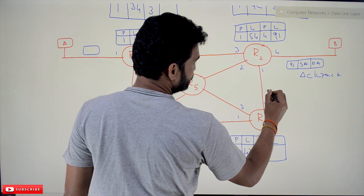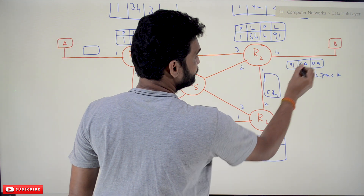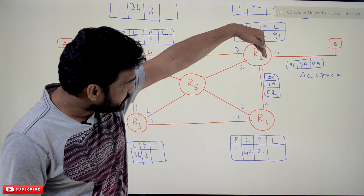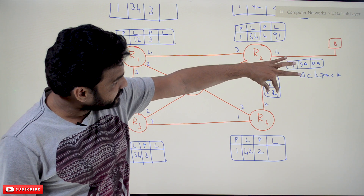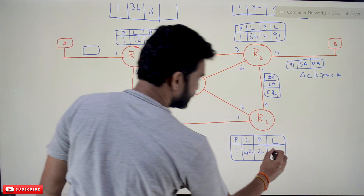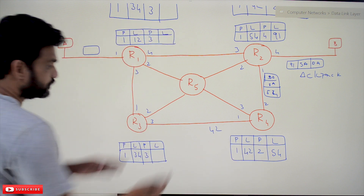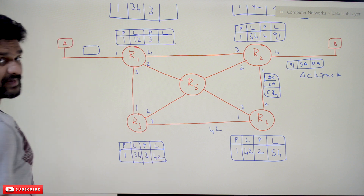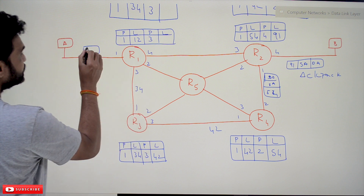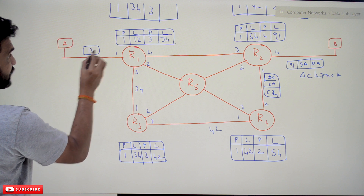The acknowledgement packet carries the source address, destination address, and the label. It is transmitted back to R4 with label 54, which gets stored in that outgoing label field. Similarly, the label 42 is transferred back and stored, then 34 is transferred back and stored, and finally 12 is transmitted back and stored. This completes the setup phase — all forwarding table entries now have both incoming and outgoing port and label values filled.